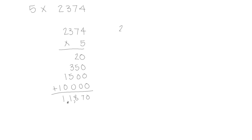Now, seeing what that looks like in the standard algorithm, we'd again start with the ones. Four ones five times is 20 ones. This time we're going to leave the digit in the ones place, which is zero, and put the digit in the tens place into the tens column. Now we multiply five times seven tens, which is 35 tens, plus two more tens would be 37 tens. So we'll leave the seven tens here and put the three hundreds in the hundreds column. Three hundreds times five would be fifteen hundreds, plus three would be eighteen hundreds. We'll leave the eight hundreds here and the one thousand in the thousands column.